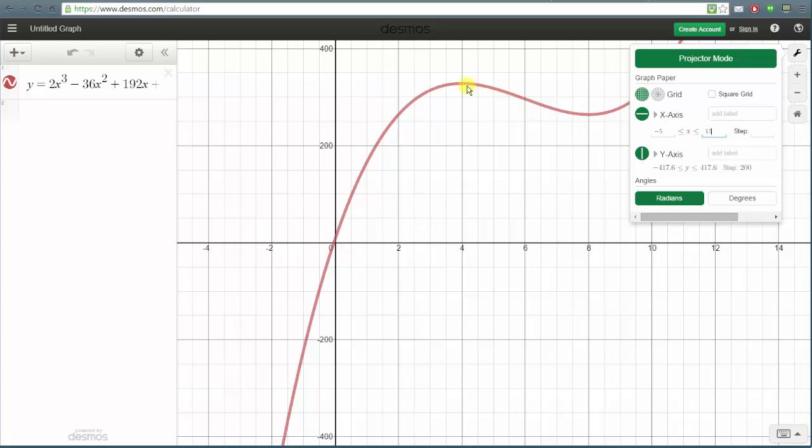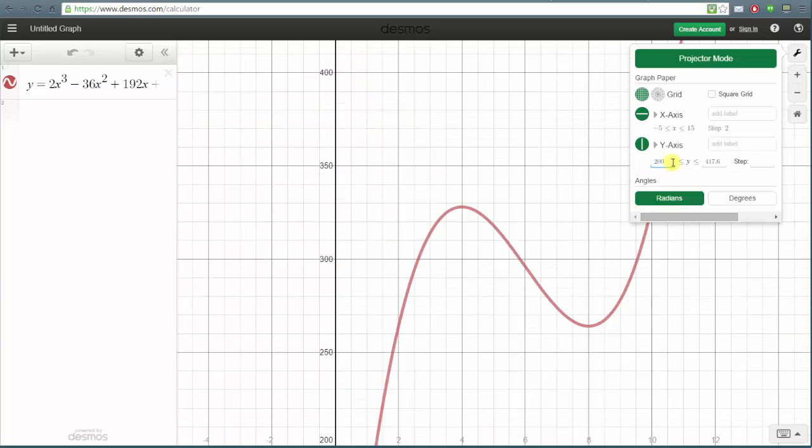Notice now looking at the graph we can see a high point and a low point but let's adjust the scaling on the y axis to get a better view. Let's change the y minimum to 200 and the y maximum to 400. So we'll change the y min to 200 and the y max to 400.